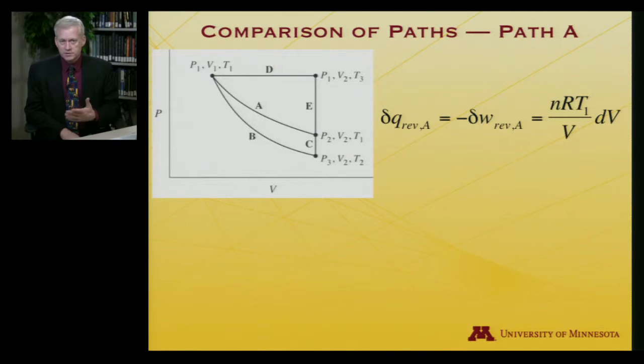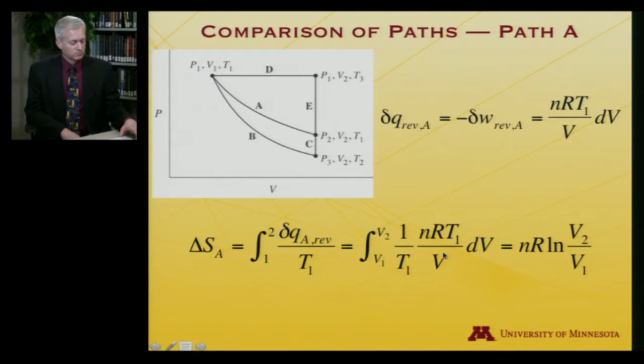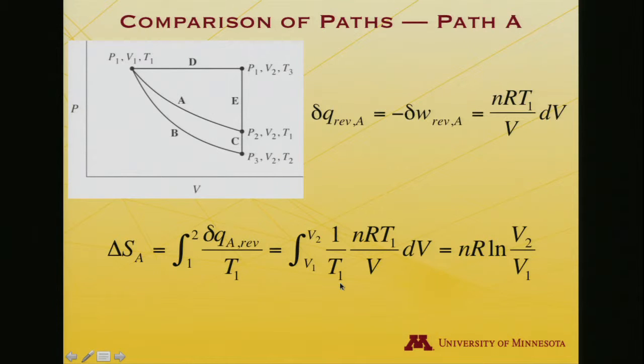So given that, this is just recapitulating that equation - I've got the change in the heat here. If I instead want to compute the change in entropy, now I integrate not del Q, but del Q over T from state point one to state point two. So one over T1, because T is a constant here, nRT1 - those T's will cancel. So I'll get the integral from V1 to V2 of nR dV over V, which gives nR log V2 over V1. So that is the change in entropy along path A.